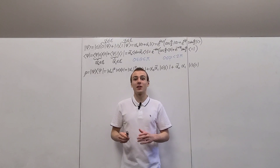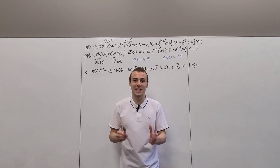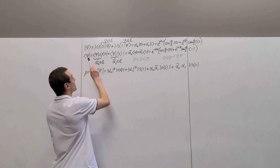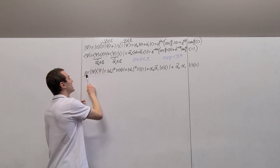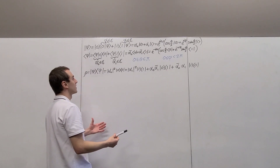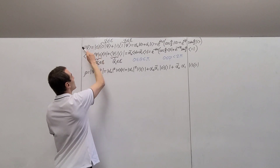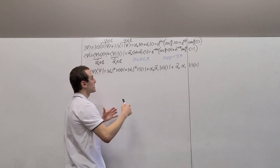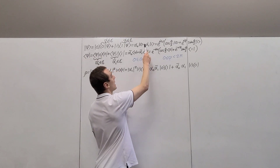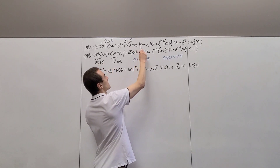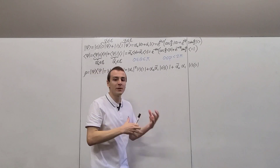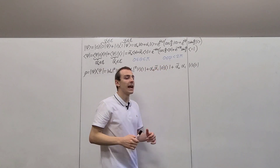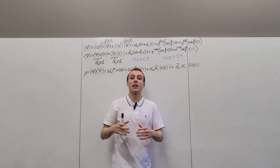Let's use the density matrix to construct the Bloch sphere visualization. In the previous video in the quantum mechanics playlist, we saw this representation in terms of rho, the density operator, also known as the density matrix. We wrote down a general qubit state as a ket and found the bra version as well, expressing them in terms of the computational basis. We took the coefficients alpha zero and alpha one and parameterized them in terms of angles.